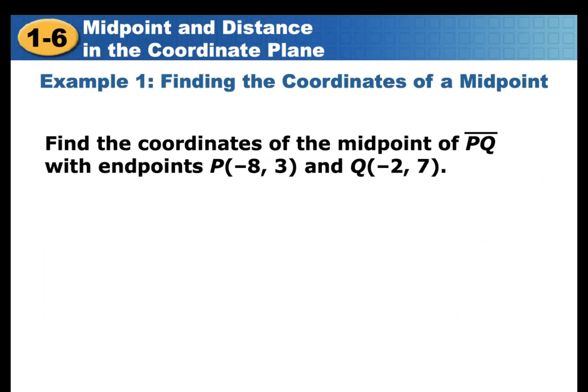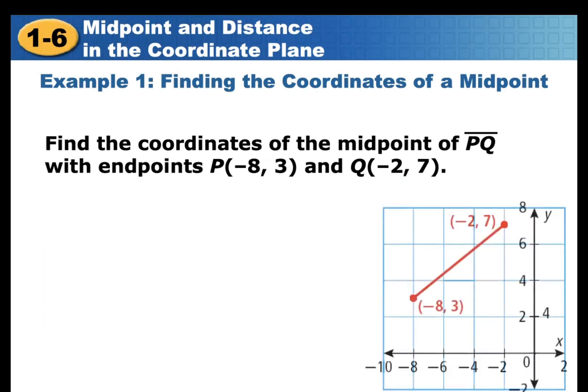So we have an example: find the coordinates of the midpoint of line segment PQ with endpoints P(-8, 3) and Q(-2, 7). On this graphing paper, we have the midpoint of P(-8, 3) and Q(-2, 7).